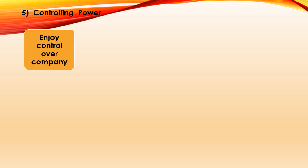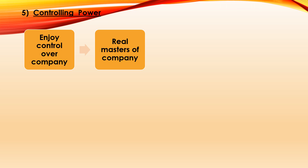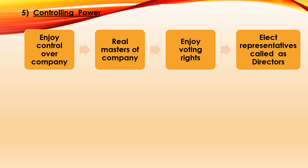The fifth feature of equity shares is controlling power. Equity shareholders, being the owners of the company, enjoy controlling rights. They are called the real masters of the company and exercise control through their exclusive voting rights — they cast votes in proportion to their shareholdings. Further, they appoint their representatives called directors or board of directors, who look after management of the company on behalf of equity shareholders. In this way, through exclusive voting rights and their representatives, equity shareholders enjoy controlling power over the management of the joint stock company.